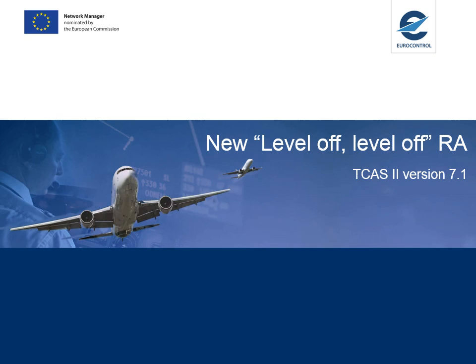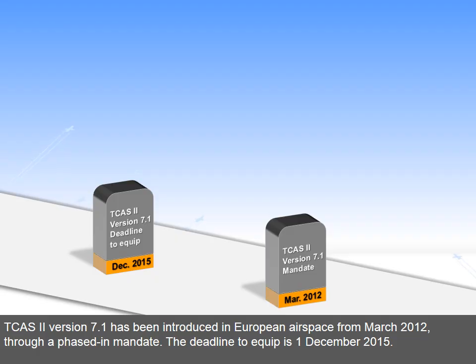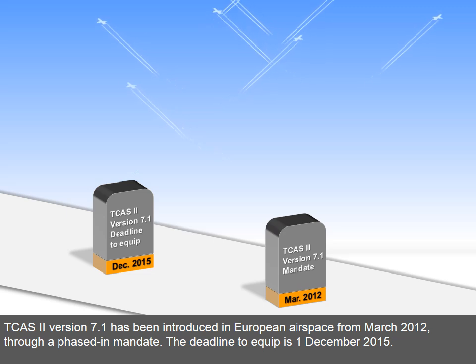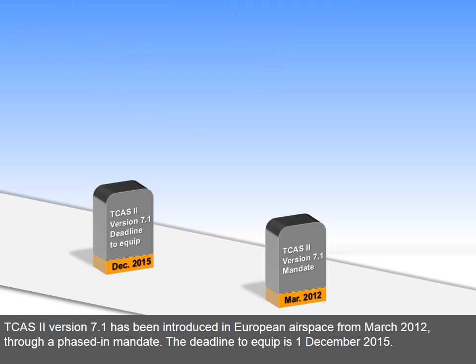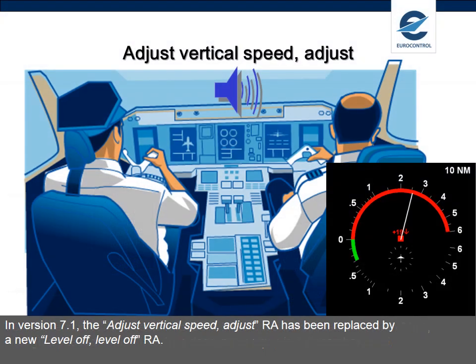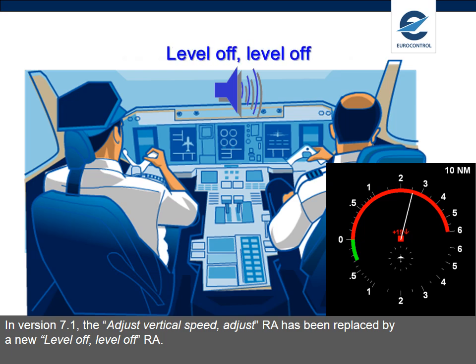Hello. In this short video, Eurocontrol would like to tell you about the new Level Off RA. TCAS 2 version 7.1 has been introduced in European airspace from March 2012 through a phased-in mandate. The deadline to equip is 1 December 2015. In version 7.1, the Adjust Vertical Speed Adjust RA has been replaced by a new Level Off RA.